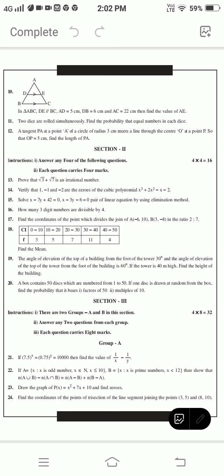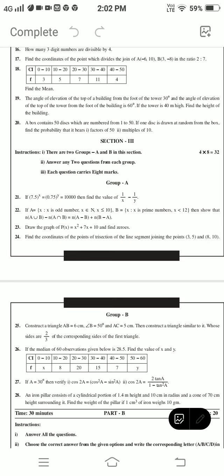Section 3: 4 questions, each worth 8 marks for 32 marks. Group A and Group B - answer 2 questions from Group A and 2 questions from Group B. Question 21: If 7.5^x = 0.75^y = 10,000, then find the value of 1/x - 1/y.